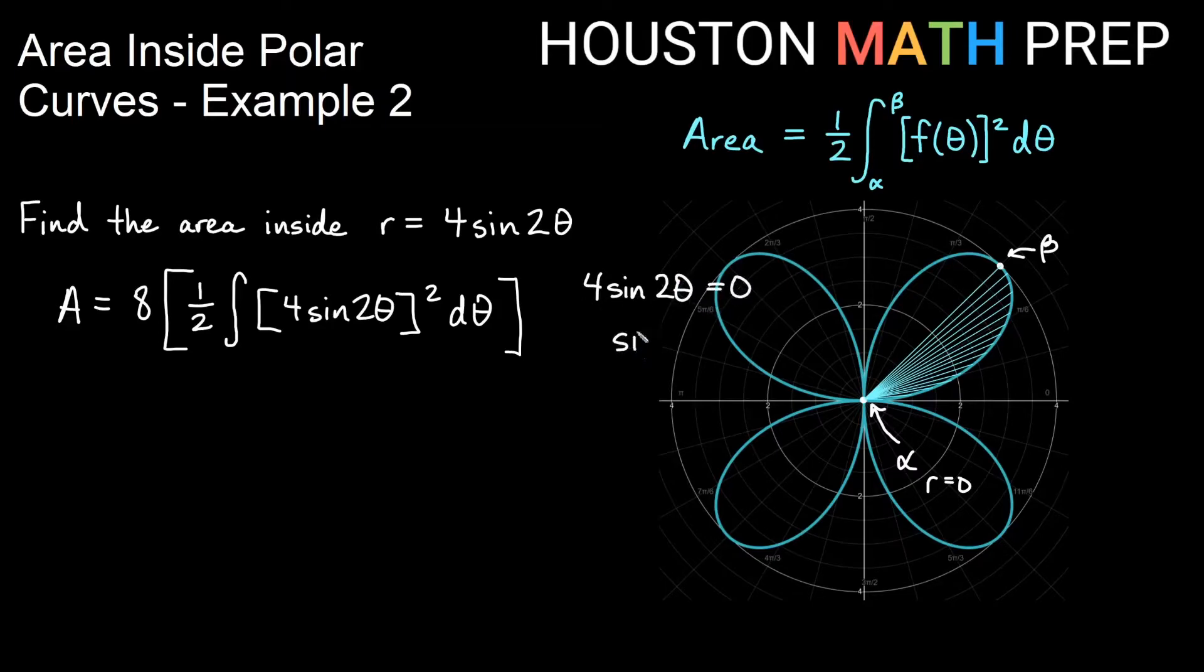Where is that first true on the unit circle? Well, that would be at sine of zero, right? So 2 theta needs to be zero, and then theta needs to be zero. This is at an angle of zero, even though you can't really tell because it's on the pole there. So our alpha is zero. We're integrating from zero to something.